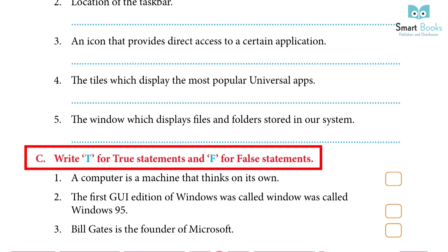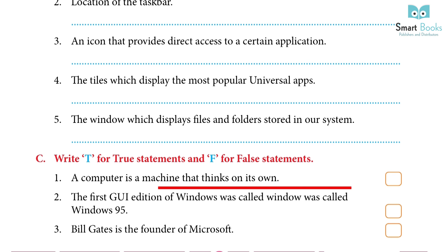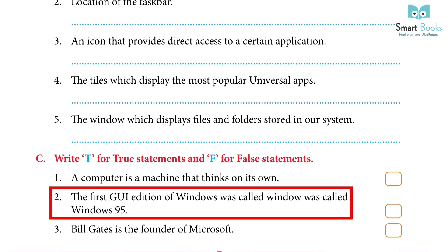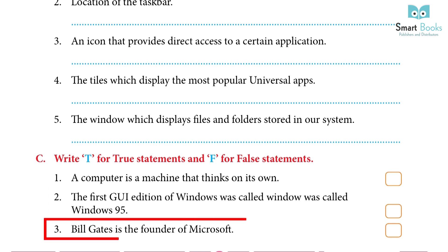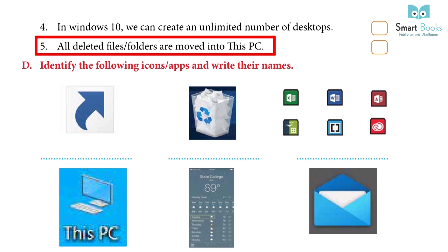Write T for true statements and F for false statements: 1. A computer is a machine that thinks on its own — Answer: False. 2. The first GUI edition of Windows was called Windows 95 — Answer: True. 3. Bill Gates is the founder of Microsoft — Answer: True. 4. In Windows 10, we can create an unlimited number of desktops — Answer: False. 5. All deleted files and folders are moved into This PC — Answer: False.